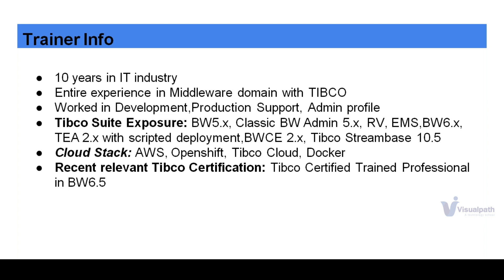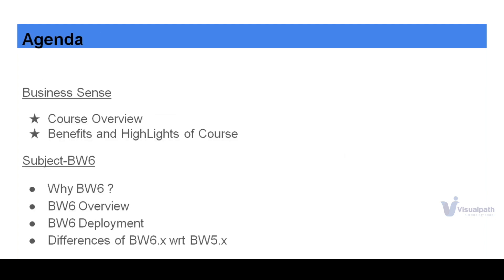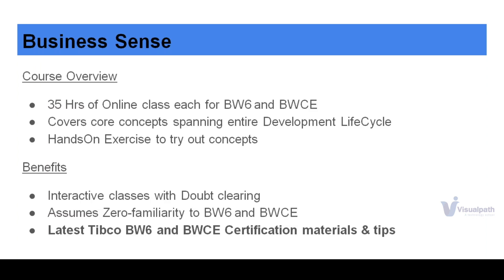This is my eighth batch for this course. The class count would be around 30, with 35 hours being the minimum target. To cover the course material for both BW6 and BWC, we'd require around 35, but more likely around 40 classes. Let's go through the overview first.